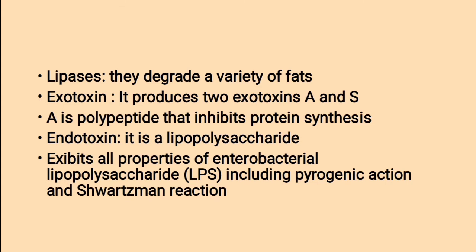Exotoxin: Pseudomonas produces two exotoxins, A and S. Exotoxin A is a polypeptide that inhibits protein synthesis. Endotoxin: It is a lipopolysaccharide that exhibits all properties of endotoxic lipopolysaccharide including pyrogenic action — meaning producing heat — and the Schwartzman reaction, which is the reaction of endotoxin creating thrombosis in the affected tissue.